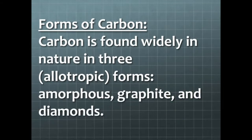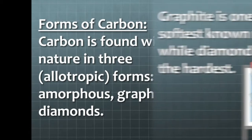Carbon is found widely in nature in three allotropic forms: amorphous, graphite, and diamonds.